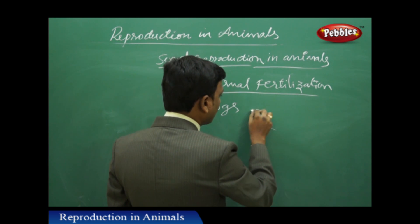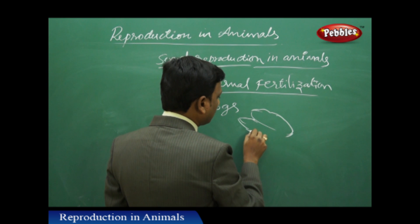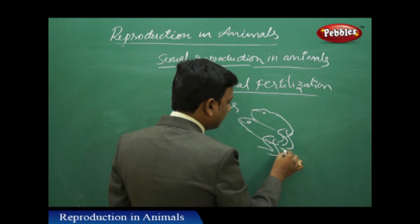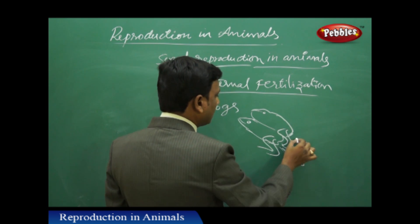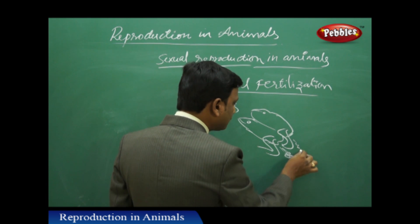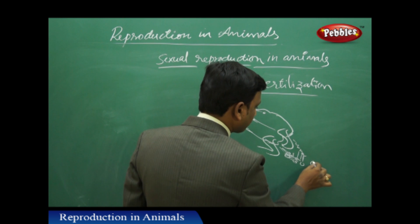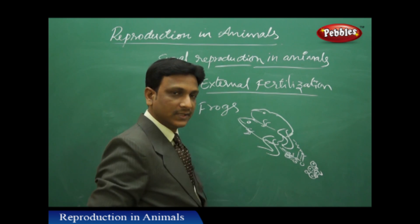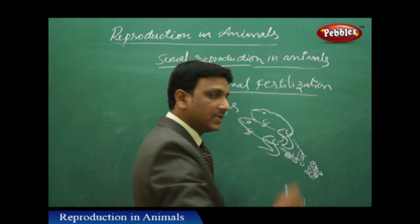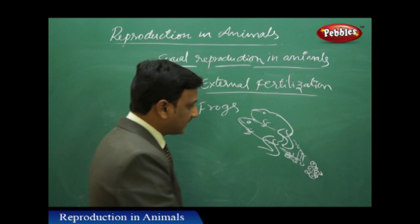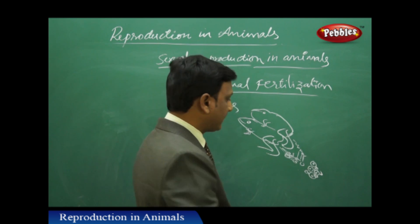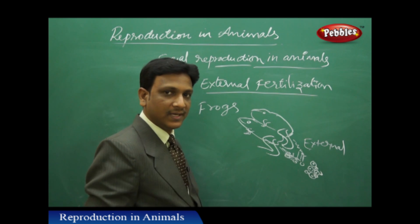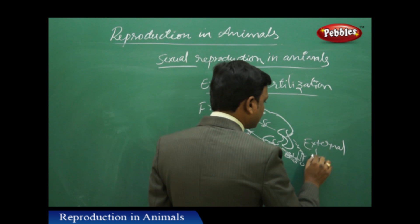So how does external fertilization take place? When a frog copulates with another frog, the female frog releases eggs into the water and the male frog releases male cells. Both fuse together to form zygotes in the external environment. They are releasing their male and female cells into the water, where they fuse to form the zygote. Since this fertilization does not happen inside the body of either male or female — it is entirely outside — we call it external fertilization.